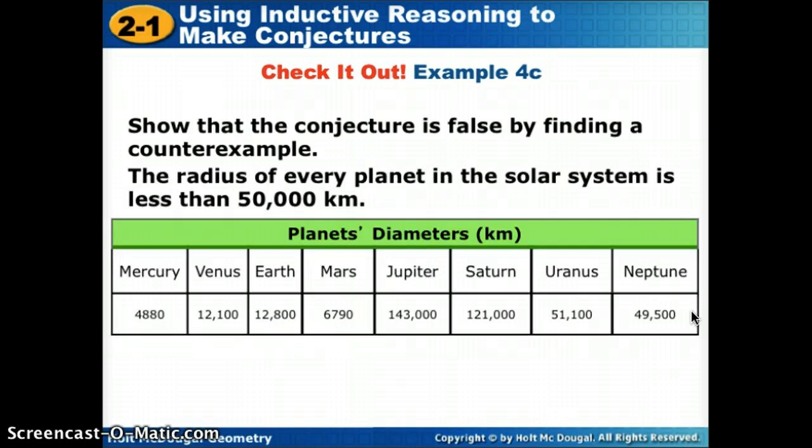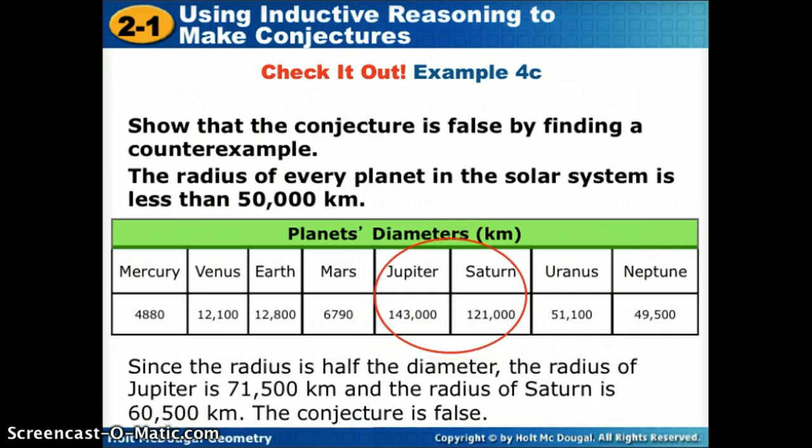Here's one more using data. The radius of every planet in the solar system is less than 50,000 kilometers. So this set of data is giving us diameter. So first thing we need to know, what is the relationship between radius and diameter? Well, radius is half the diameter. So I want to find ones with diameter that is bigger than whatever twice my radius is. So I'm looking for a diameter bigger than 100,000 kilometers. Well, I see that there are two here that are bigger than 100,000.